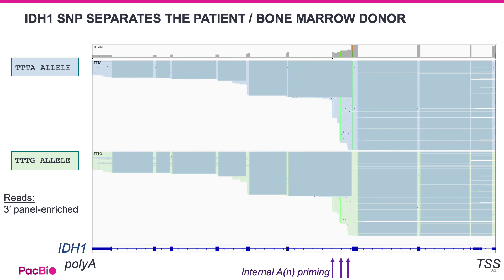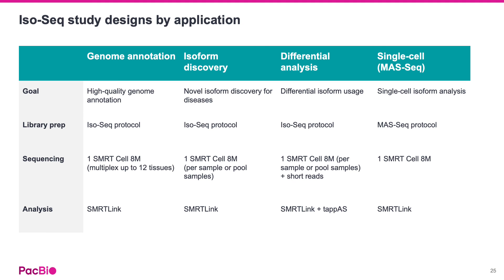The power of seeing full-length isoforms is demonstrated in this IGV screenshot, where for the IDH1 gene, a single-base mutation more than 600 bases downstream of the transcription start site is found — the mutation that separates the patient from the bone marrow donor. The ability to see distant variants at the single-cell level will be important for disease research. To recap, PacBio HiFi sequencing enables full-length isoform information for both bulk and single-cell transcriptome studies. We are excited to hear how researchers apply ISO-SEQ for their studies in the remaining talks of today's event.